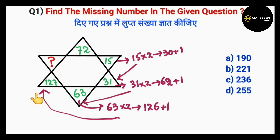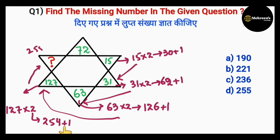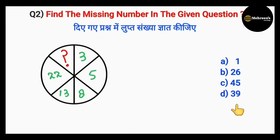So, applying the same operation to 127 to find the missing number: 127 into 2 equals 254, then plus 1 gives us 255. So our missing number is 255, which means option D is the correct one.